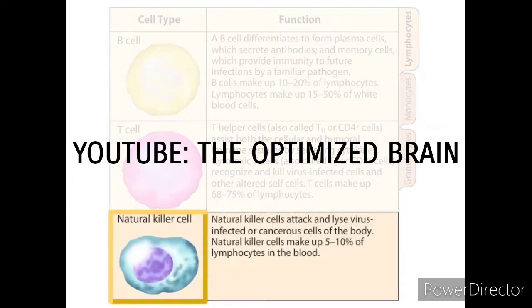Natural killer cells attack and lyse virus-infected or cancerous cells of the body. Natural killer cells make up 5 to 10 percent of lymphocytes in the blood.